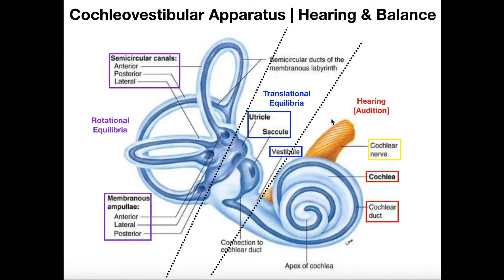So we have a cochlear nerve and a vestibular nerve. Eventually those two nerves fuse together and become what's called the vestibulocochlear nerve — cranial nerve number eight. It goes to the brain and collectively gives the brain information on both hearing and balance and proprioception, which come from the vestibular apparatus.